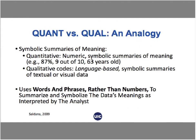One of the best ways to describe qualitative data analysis is to compare it to quantitative data analysis. In quantitative, symbolic summaries of meaning are used — numbers and percentages like 87%, 9 out of 10, or 63 years old. In qualitative, we use language to provide those symbolic summaries, and that's really what codes are: language-based symbolic summaries of textual or visual data. We use words and phrases rather than numbers to describe the data's meaning as interpreted by the analyst.